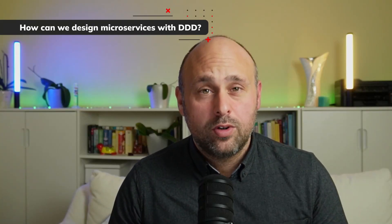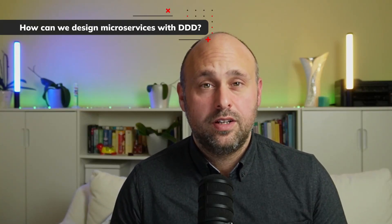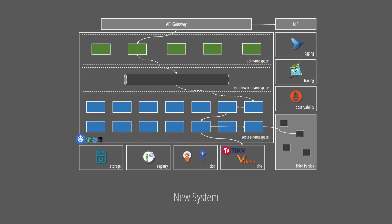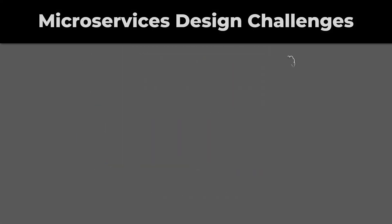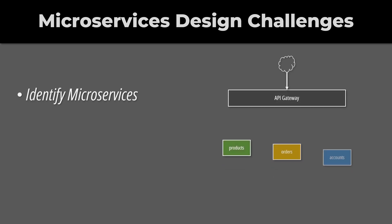How can we design a microservices architecture using DDD? Whether we are designing a new system or trying to decompose a monolith, the main challenges in a microservices architecture are decomposing the system into services with well-defined responsibilities.